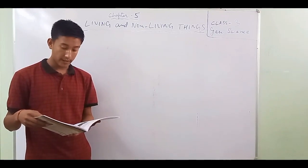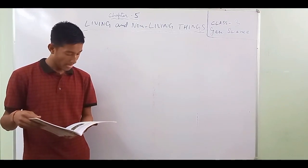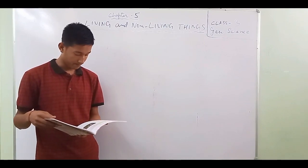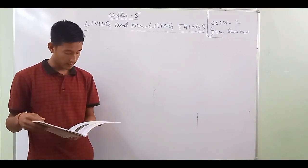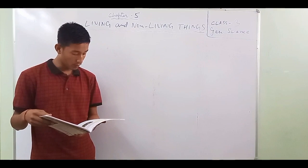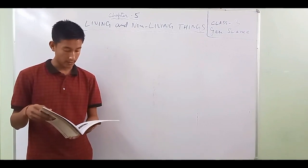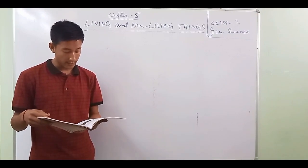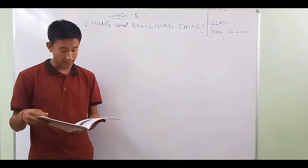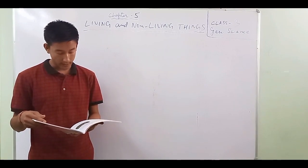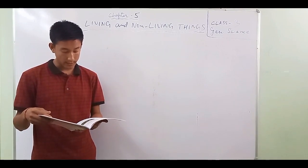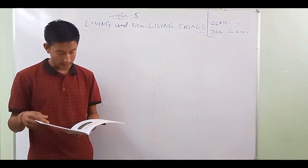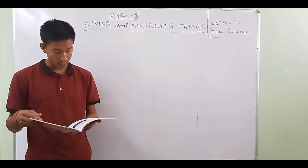First, living things move. Animals move from place to place in search of food and shelter, and also to run away from their enemies. Most animals have legs to move. A fish uses its fins and tail to move in water. A bird uses its wings to fly and legs to walk. Snakes use their bodies to move.